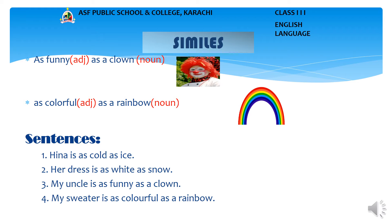Now we will learn how to use similes with 'as' in sentences. Sentence No. 1: Hina is as cold as ice. No. 2: Her dress is as white as snow. No. 3: My uncle is as funny as a clown. No. 4: My sweater is as colorful as a rainbow.